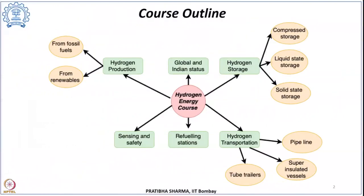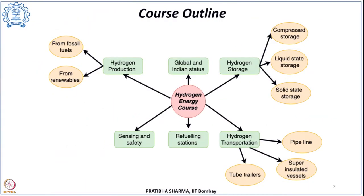In this course, we are going to learn the different aspects of the hydrogen energy value chain. We will see the different methods of hydrogen production from fossil fuels and from renewables. We will go in much more detail on the industrial scale hydrogen production methods. We will also learn the methods which are still at laboratory scale or where certain prototypes have been demonstrated.